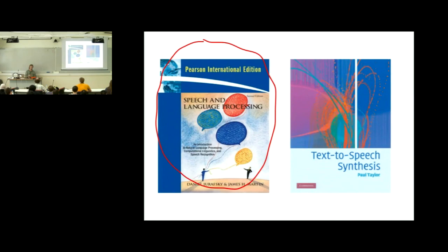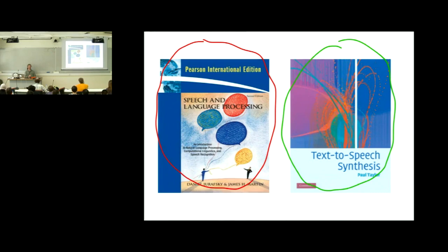It's 1,000 pages of excellent stuff, and for what it is, it's a very good value book — a big, thick book. An equally thick but more specialized and more expensive book is Paul Taylor's book with the excellent title, Text-to-Speech Synthesis. It does what it says on the cover — everything in text-to-speech synthesis, including Paul's attempt at signal processing, which is pretty good. These are the sources I would always refer my students to.